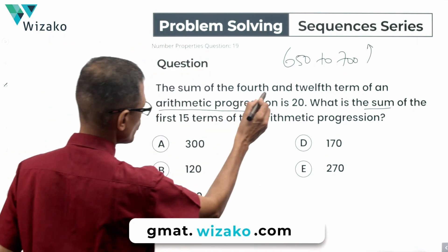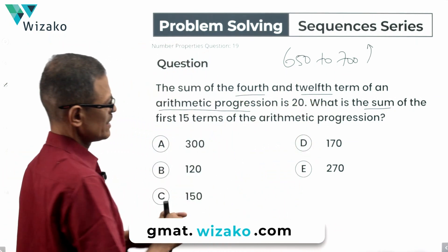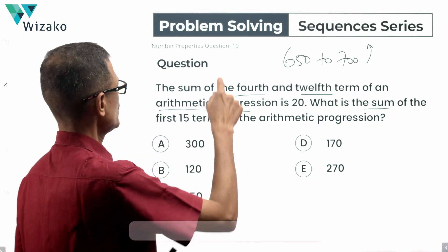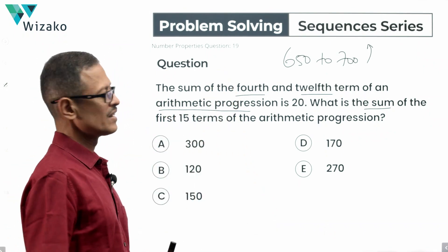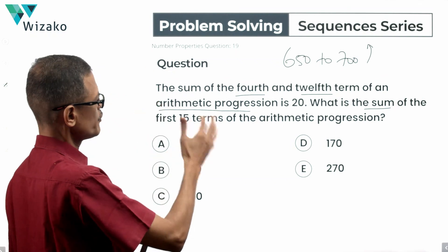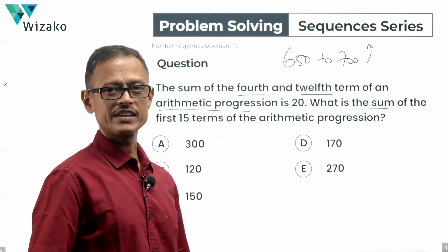The sum of the fourth and the twelfth term, two terms, fourth term, twelfth term of an arithmetic progression is 20. What is the sum of the first 15 terms of the arithmetic progression is what the question is.